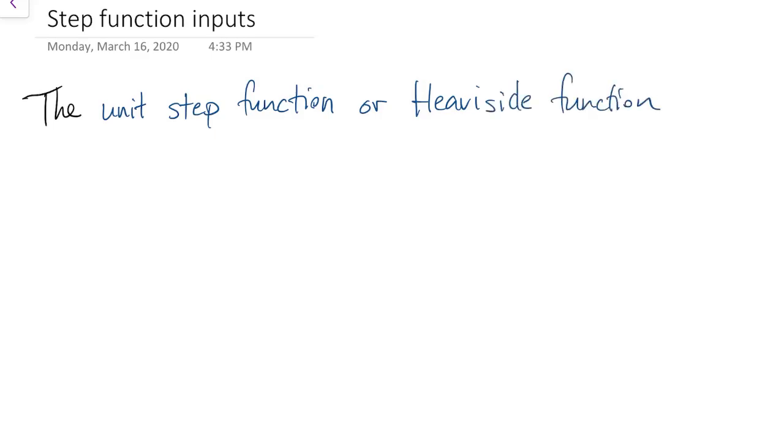We're going to use capital H of T to denote the Heaviside function. And its graph is just a simple step up. So it's 0 for negative values of T, and 1 for positive values of T.